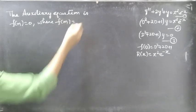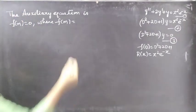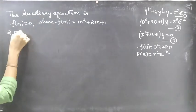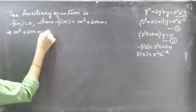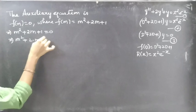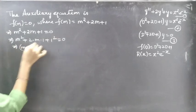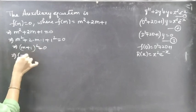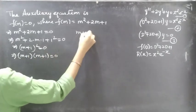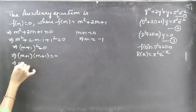Since f(D) = D² + 2D + 1, we replace D with m to get f(m) = m² + 2m + 1. The auxiliary equation becomes m² + 2m + 1 = 0. This looks like the expansion of (m + 1)², which we can write as (m + 1)(m + 1) = 0. Equating each factor to zero: if m + 1 = 0, then m = -1.